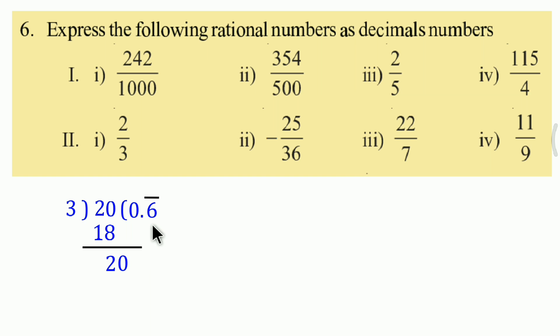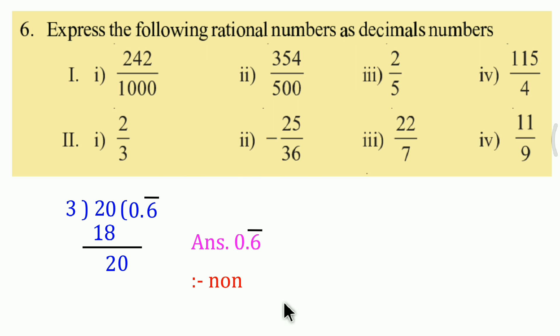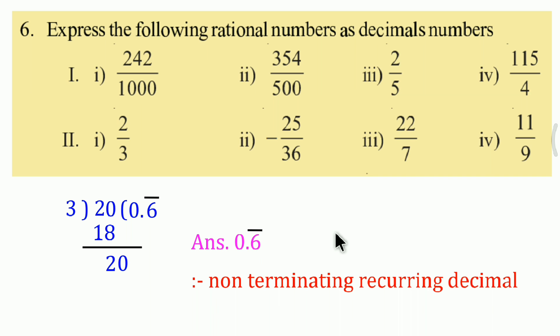The digit 6 keeps repeating. We represent this as 0.6 with a dash (bar) over 6. This repeating part is called the period. Values like these are called non-terminating recurring decimals. They don't terminate, but some digits recur and repeat.